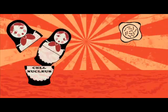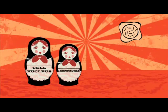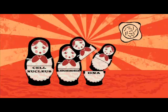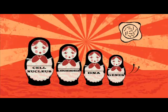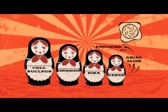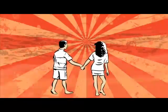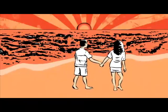Let's just go over that again. Inside each cell nucleus are chromosomes that are made from DNA. DNA contains genes. Each gene has a code to make a protein. The protein is made out of amino acids that are joined together in the order determined by the code.